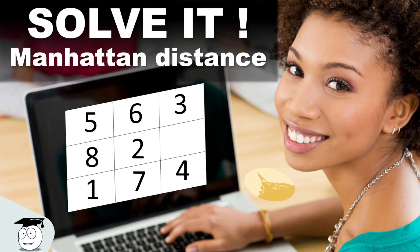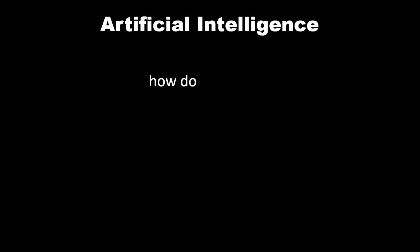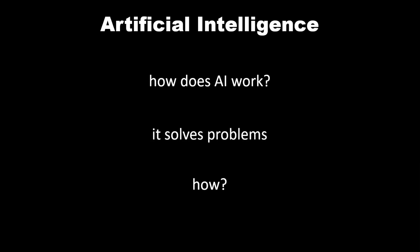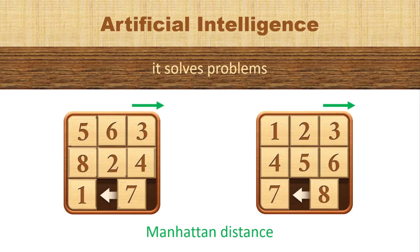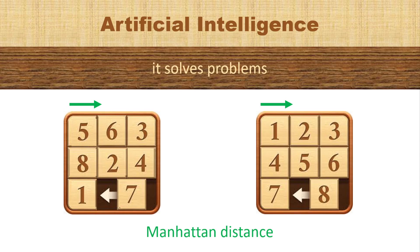We use algorithms to solve a problem, and now we've moved into the area of artificial intelligence, we're really looking at how we can solve problems. One example is to use a heuristic. In this video we're going to look at the Manhattan distance as a heuristic to help solve the eight puzzle.